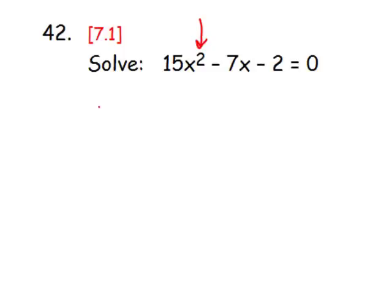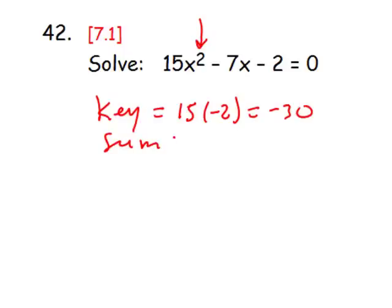We need to use the factor game, so let's find the key number, which is 15 times negative 2, which is negative 30. The sum number is negative 7. So the two factors of negative 30 that add to negative 7 are negative 10 and 3.